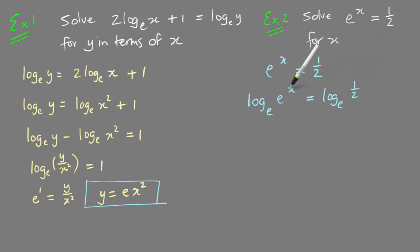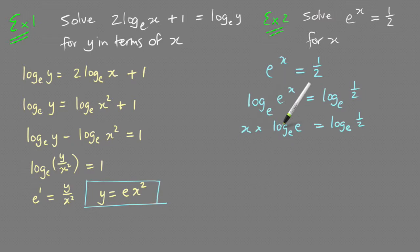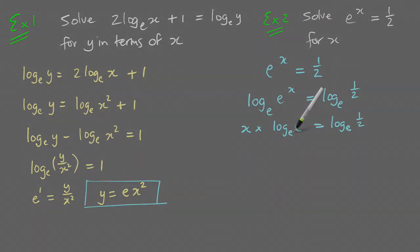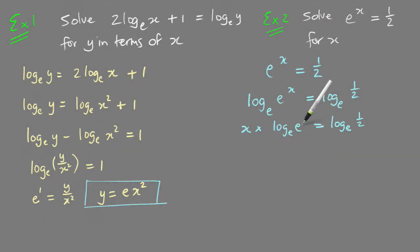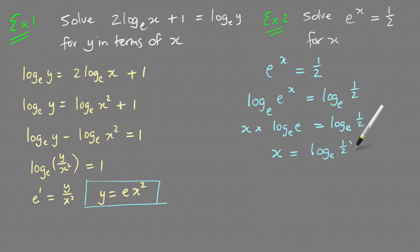The x can come out the front: x · log_e(e) = log_e(½). Now log_e(e) = 1 — the log of a number where the base is the same number always equals 1 — so this becomes x = log_e(½).